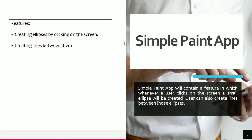A simple paint app will contain a feature in which whenever a user clicks on the screen, a small ellipse will be created. The user can also create lines between those ellipses. Basically, whenever a user clicks on the screen, ellipses will be created and lines will be created between them whenever the user drags the mouse.